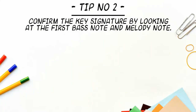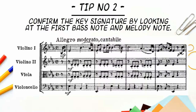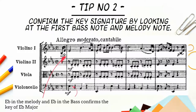Tip number two: confirm the key signature by looking at the first bass note and the melody note. In this example by Haydn, the bass note is an E flat and the melody note is an E flat, which confirms the key of E flat major as opposed to C minor.